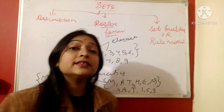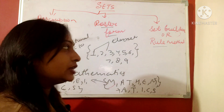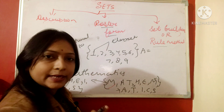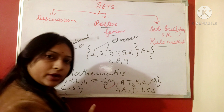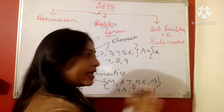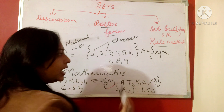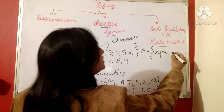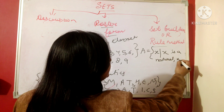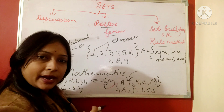In the same way we have the set builder form, also called the rule method. In set builder form, we write the condition. For example, let set A be written in set builder form: A = {x | x is a natural number, x < 10}. The vertical line is read as 'such that,' so it reads: x such that x is a natural number and x is less than 10.